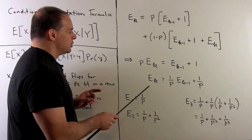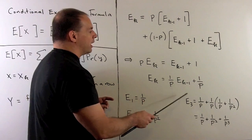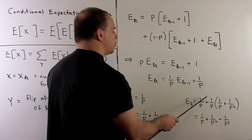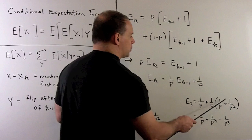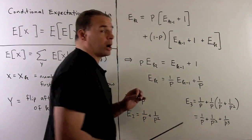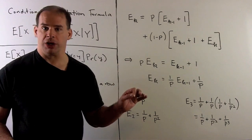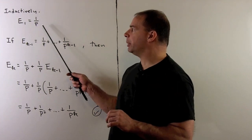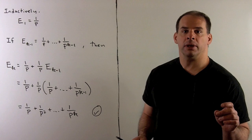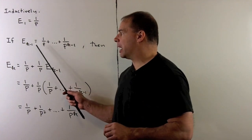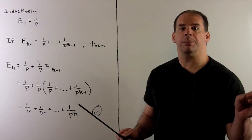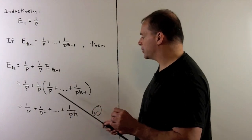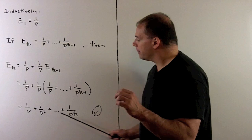For e sub 2, using our formula, we put in 1/p and get 1/p plus 1/p². For e sub 3, we have 1/p plus e sub 2, which gives 1/p plus 1/p² plus 1/p³. We see a pattern emerging. To get our general formula, we work inductively. Our base case is e sub 1 equals 1/p. In general, assuming e sub (k-1) equals 1/p + 1/p² + ... + 1/p^(k-1), we use our recursive formula, substitute, and we get our formula: e sub k equals 1/p + 1/p² + ... + 1/p^k.